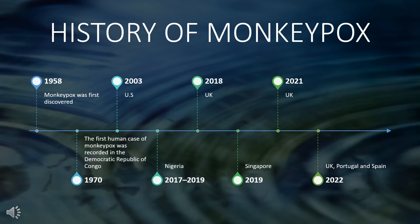Let's have a quick look at the history of monkeypox. Monkeypox was first discovered in 1958 when two outbreaks of pox-like disease occurred in colonies of monkeys kept for research. The first human case of monkeypox was recorded in 1970 in the Democratic Republic of Congo. Later on, monkeypox was detected in various parts of the globe at various time frames. Recently, in 2022, a small number of confirmed cases have been reported in the United Kingdom, Portugal and Spain. As of now, there are 17 suspected cases of monkeypox in Montreal, Canada.